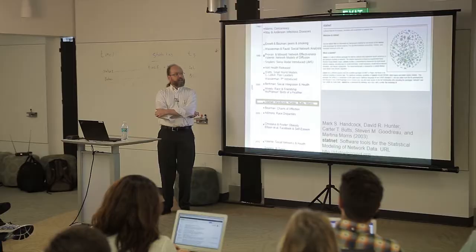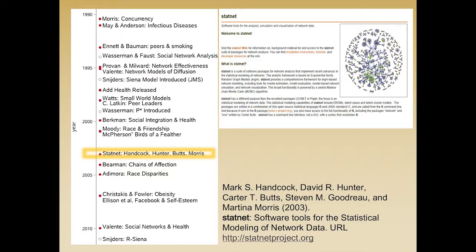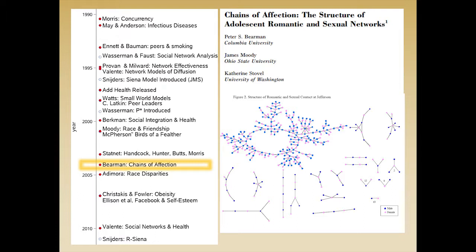In the mid-2000s, StatNet was developed — a game changer in terms of the ability to model networks as opposed to just describe them. The 'Chains of Affection' paper came out about this time and helped people think about sexual relations amongst adolescents, which hadn't been done before — a direct result of the opportunities made possible by Add Health and the work that Martina and others had done before that.